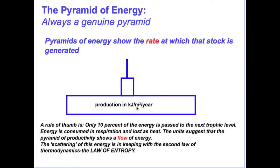A rule of thumb is that only about ten percent of the energy fixed by autotrophs is made available to the first level consumers, and then only about ten percent of that energy is made available to the second level consumers.